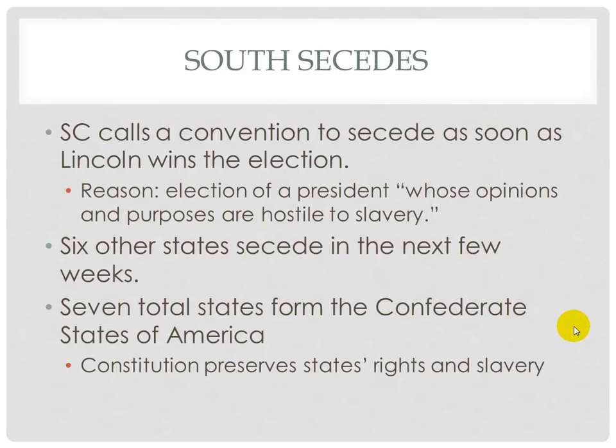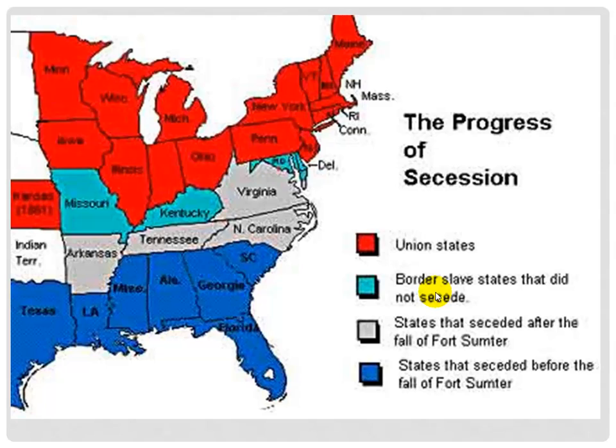In the Upper South, economic diversification had increased the importance of free labor and ties to the northern economy. States like Virginia and Kentucky weren't relying only on slavery — they had diversified their economies with factories that don't rely on slave labor. Consequently, leaders in these border slave states were more willing than those in the Lower South to seek a compromise. Without waiting for their sister slave states, delegates from the Deep South met in Montgomery, Alabama on February 4th to establish the Confederate States of America.